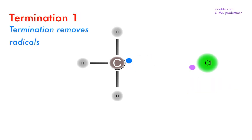The chain reaction is stopped when two radicals come together to form a bond. These are called termination reactions.